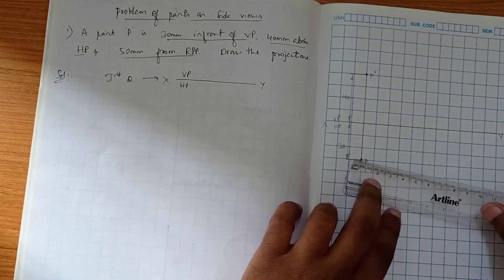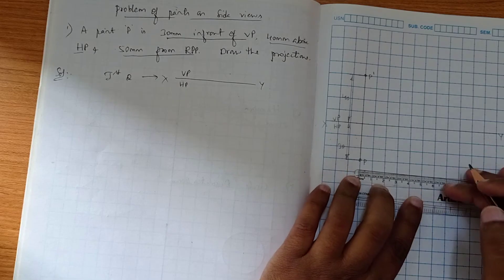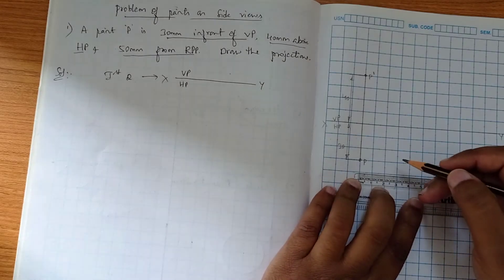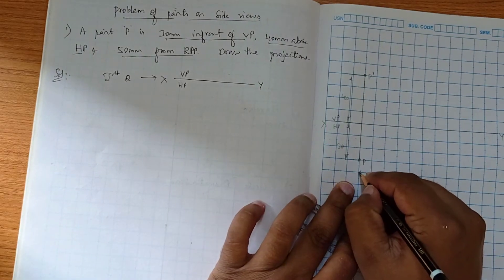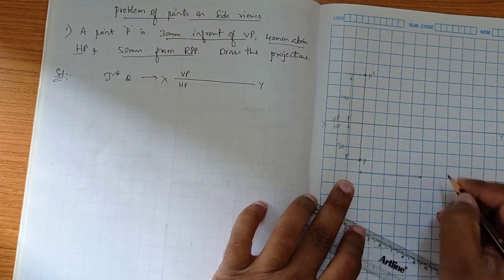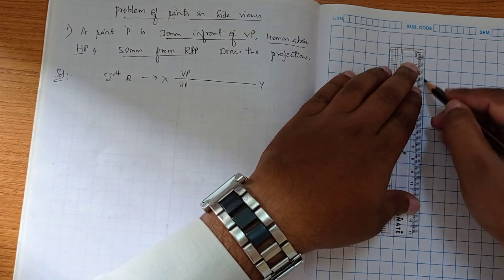Now from this projection point we have to consider a distance of 50, that is 5 boxes. Keeping this distance of 5 boxes, here we are going to draw X1Y1 because it is 50mm from RPP.